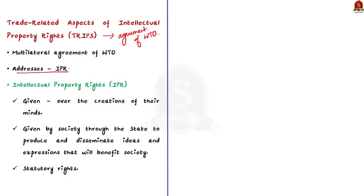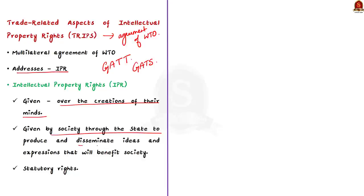Some other important agreements under WTO are the General Agreement on Tariffs and Trade and the General Agreement on Trade and Services. Coming back to TRIPS: IPRs are the rights given to people over the creations of their minds. These rights are given by the society through the state as an incentive to provide and disseminate ideas and expressions that will benefit society as a whole. They usually give the creator an exclusive right over the use of their creation for a certain period of time.